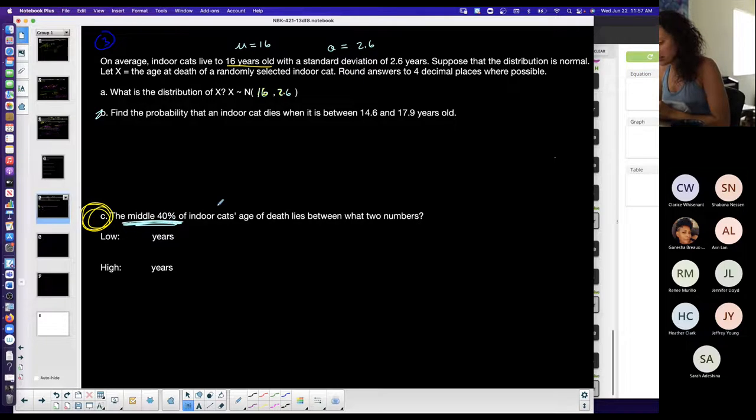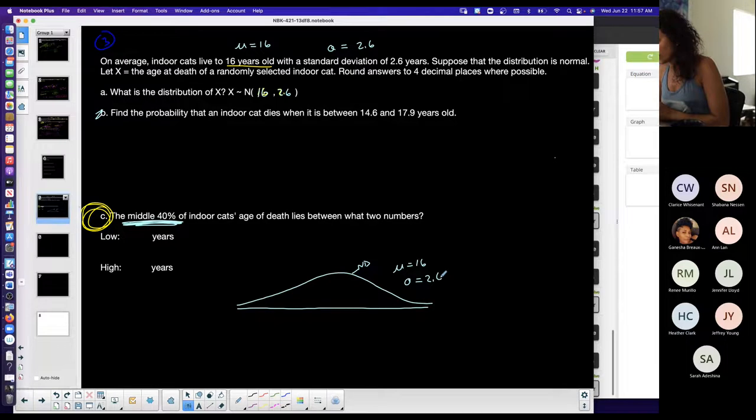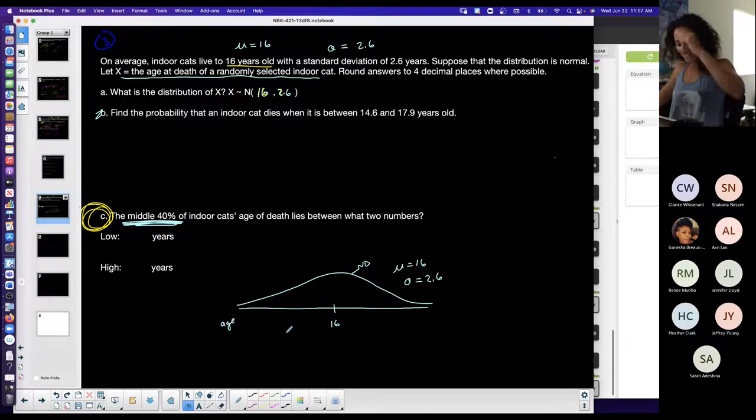They give me the middle 40% so I'm going to draw that out real quick. I'm on a normal distribution curve with the mean is 16 and the standard deviation is 2.6. The center of this curve is 16. The horizontal scale here is the age at death of randomly selected indoor cat.